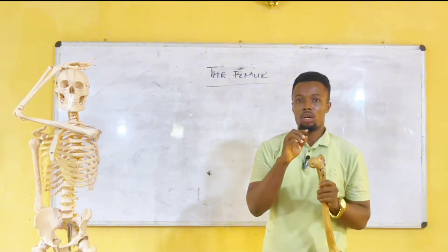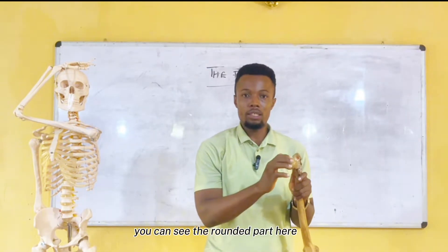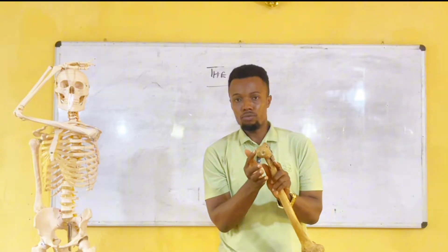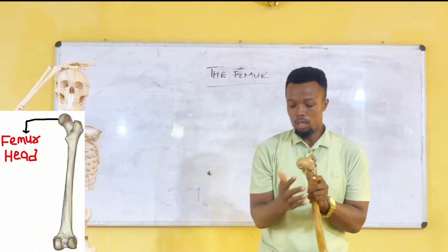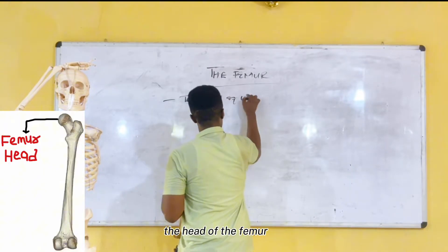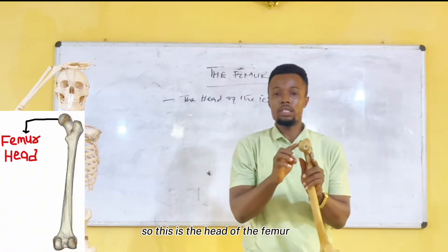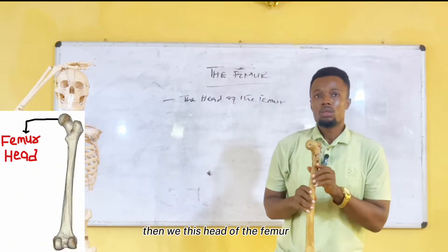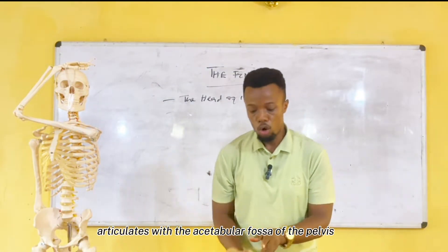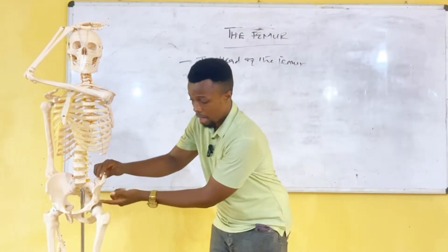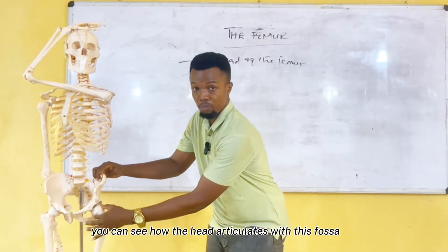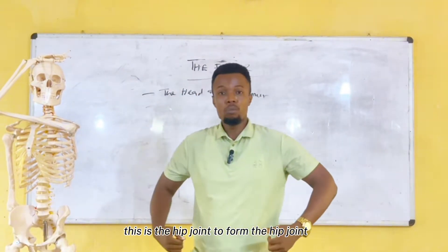Let's look at the important features in the proximal part. You can see this rounded part here — this is referred to as the head of the femur. This head of the femur articulates with the acetabular fossa of the pelvis. This is the pelvic bone and this is the acetabular fossa of the pelvic bone. You can see how the head articulates with this fossa to form the hip joint.